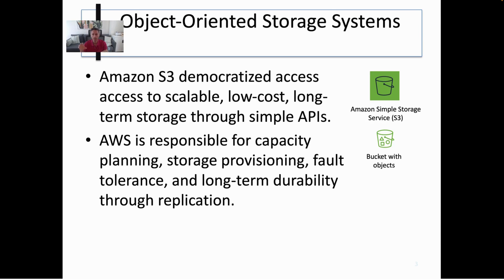If we focus on the data management being done in Amazon S3, we see that it is very simple: you just create a bucket, you upload a file into a bucket, and AWS is responsible for capacity planning, storage provisioning, long-term durability, and fault tolerance — all achieving both replication and distribution among the several availability zones within the same region.